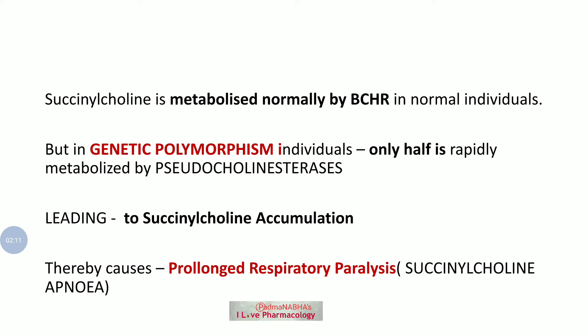In cases of genetic polymorphism or atypical pseudocholinesterase, only half of the succinylcholine is metabolized. The remaining succinylcholine accumulates, leading to prolonged respiratory paralysis, which is succinylcholine apnea.